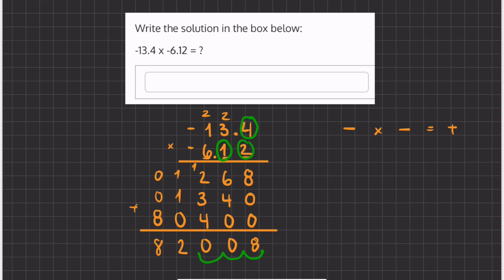And we're going to make sure that our final answer is a positive number, not a negative, because we've multiplied by two negative numbers. So our final answer is going to be 82.008.